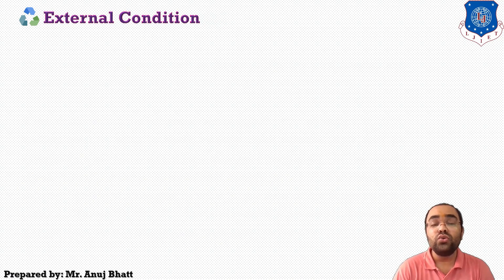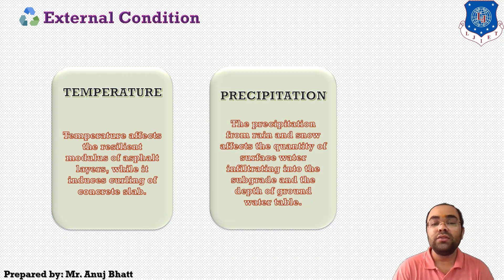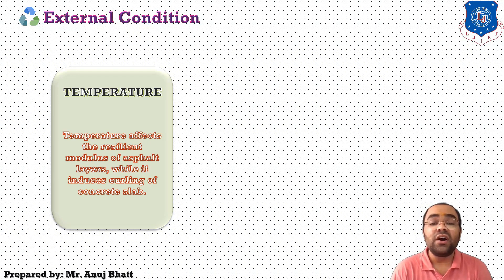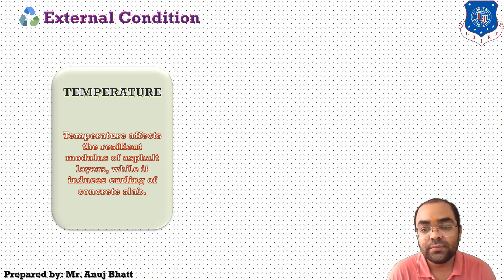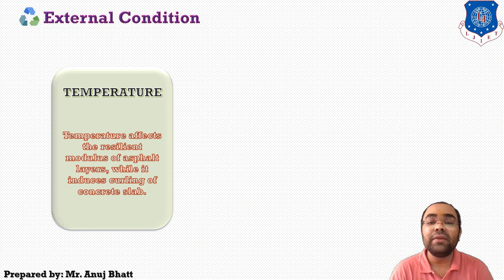In external conditions, two major factors affect rigid pavement design: temperature and precipitation. The effect of temperature on asphalt pavement is different from concrete pavement. Temperature affects the resilient modulus of the asphalt layer, while it induces curling of the concrete slab. In rigid pavement, due to the difference in temperature between the top and bottom of the slab, temperature stresses or frictional stresses are developed. In flexible pavement, the dynamic modulus of elasticity varies with temperature.